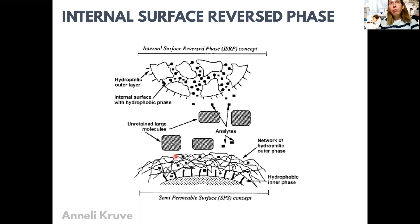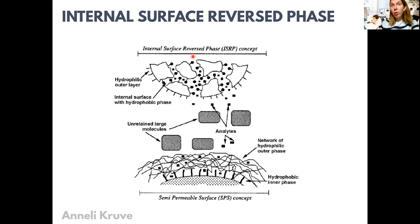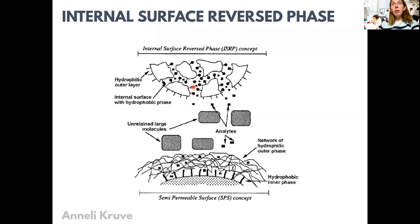Here are two different phases. In one, the large non-targeted molecules can't enter the pores of the solid-phase particles, but the smaller analytes can, and these analytes can then bind to the surface of the particles, interacting with them. Therefore, the small analyte molecules can give interactions while the large ones can't, because the large can't access this internal surface.